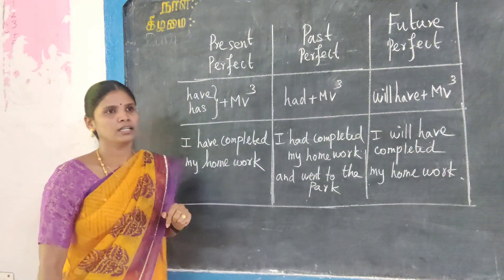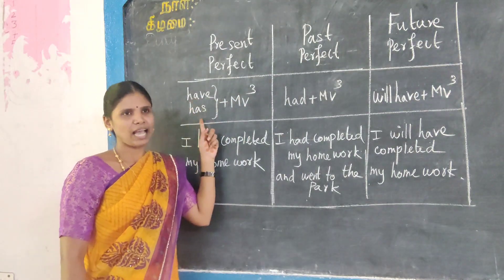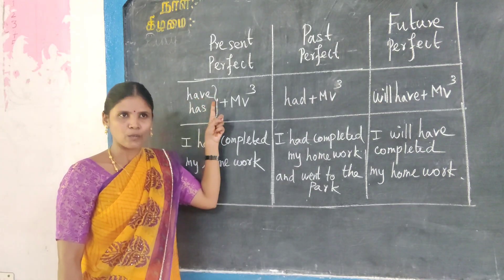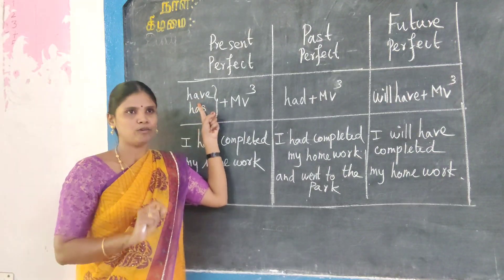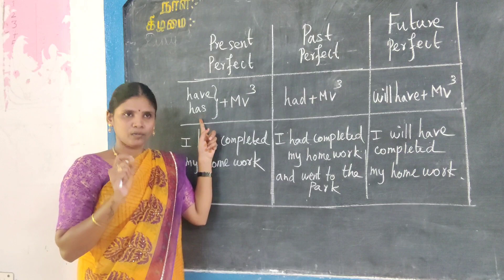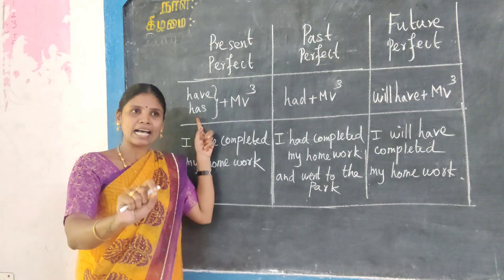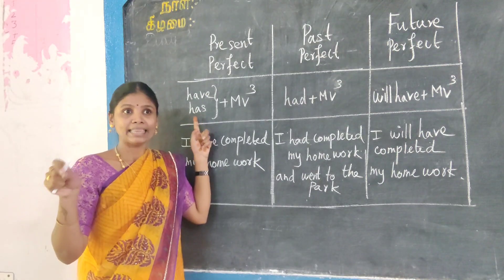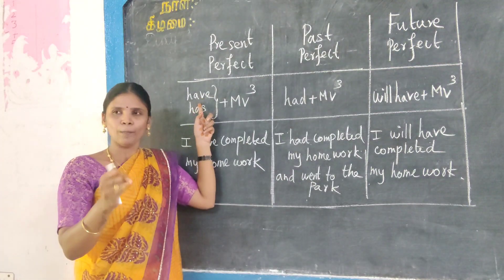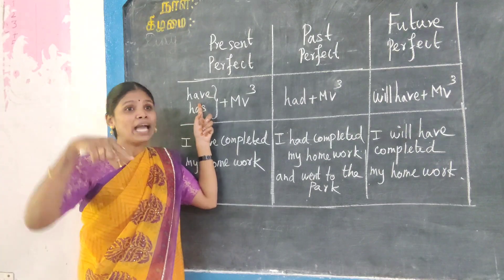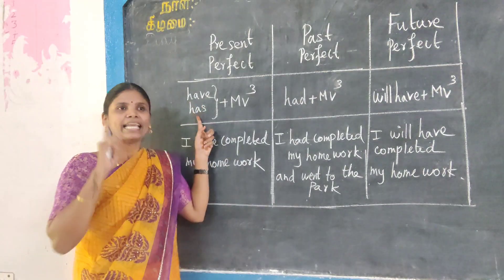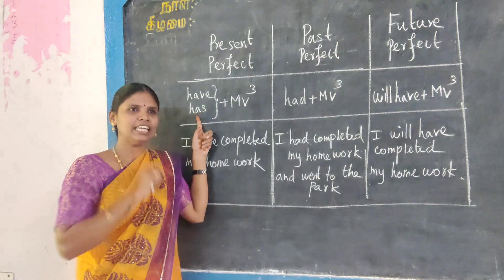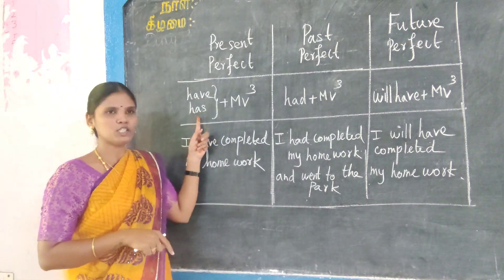Take present perfect. The helping word is have and has. For first and second person: I have, we have, you have. For third person singular, the helping word is has: he has, she has, it has. For third person plural: they have. So have is used with I, we, you, they. Has is used with he, she, it — that is third person singular.